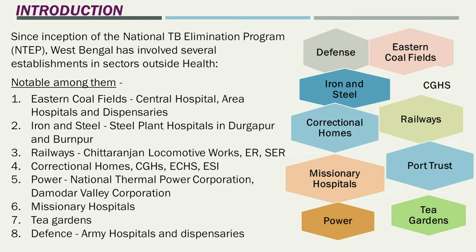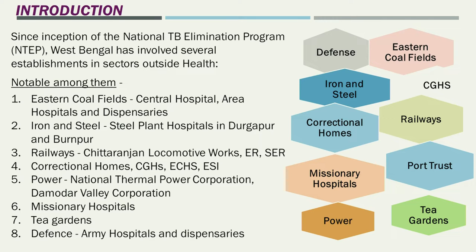The notable engagements include Eastern Coal Fields — in the Dhanbad, Jharkhand, Jamshedpur, Raniganj, Asansol, and Durgapur belt, which has coal mines. They have a central hospital, area hospitals, and dispensaries, and have been working in tandem in close cooperation with us since the inception of RNTCP. It's a very long collaboration, either in the form of a designated microscopy center, a treatment center, or both, and all of them are PHIs.